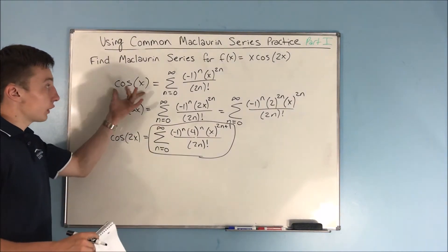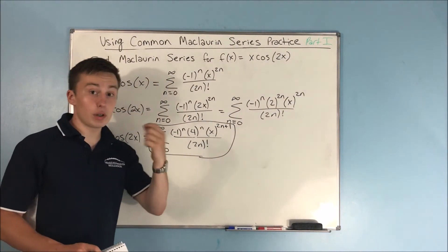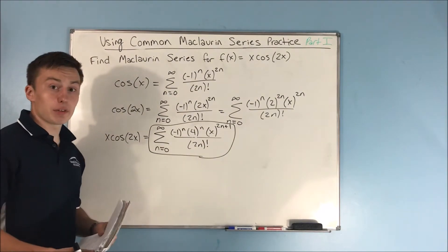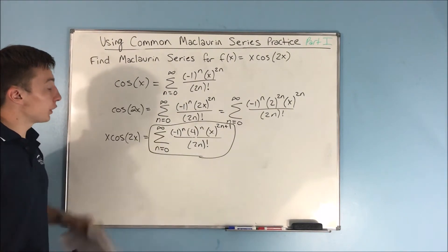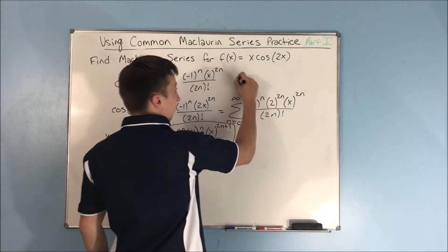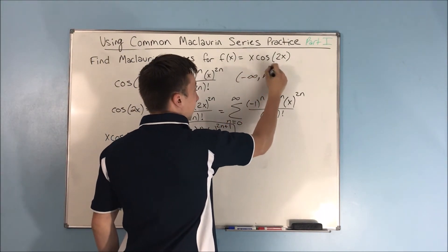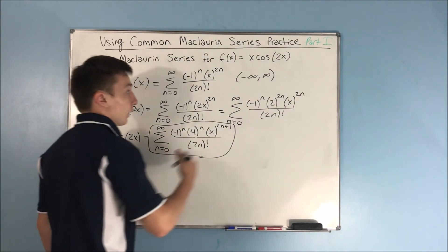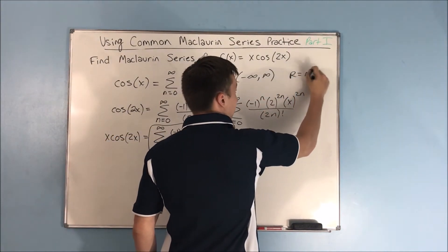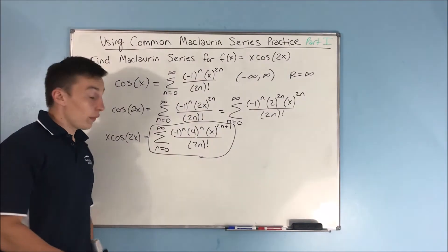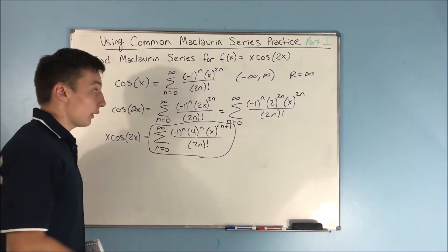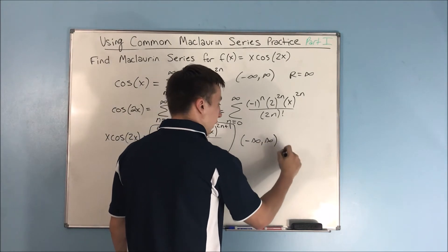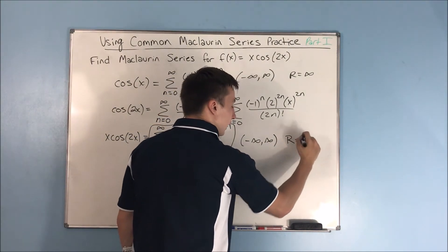We started with the cosine of x Maclaurin series that we already know. Now, what about our radius and interval of convergence? The interval of convergence for the cosine x Maclaurin series is negative infinity to infinity, and the radius of convergence is infinite. So that's the same for our Maclaurin series here — the interval of convergence is from negative infinity to infinity, and the radius of convergence is infinite.